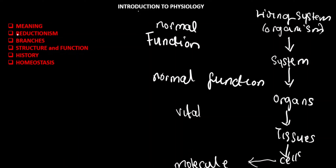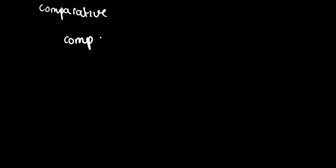Now let's take a look at some branches of physiology. There are various branches, but for this video we'll consider about three to four. The first branch we'll consider is comparative physiology, which has a comparative outlook — it studies function by comparing different species.